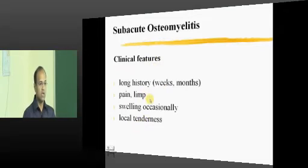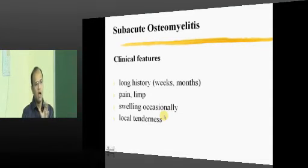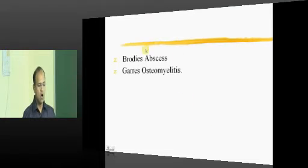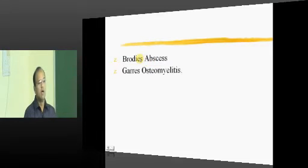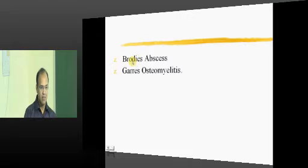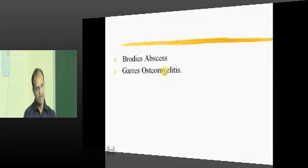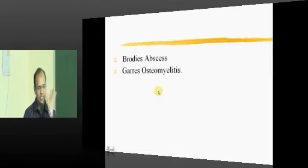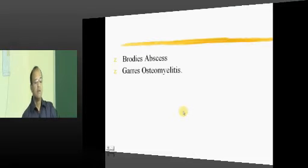In subacute osteomyelitis, the clinical features of acute osteomyelitis will be present but at a low grade for a longer time. There are two classic descriptions in textbooks: Brodie's abscess and Garre's osteomyelitis. For postgraduates, the McIntyre and Gledhill classification is used, which classifies into 6 types - Brodie's abscess comes under type 1 and Garre's osteomyelitis under type 4.